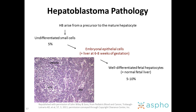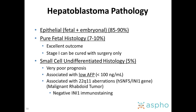The pathology of hepatoblastoma is complex and should always be reviewed by a pathology expert. Hepatoblastoma arises from a precursor to the mature hepatocyte. You may see 5% undifferentiated small cells, which usually grow to become embryonal epithelial cells that mimic the liver at six to eight weeks of gestation. The majority of cases, 85% to 90%, present with the epithelial form — either fetal or embryonal hepatoblastoma. Around 7% to 10% present with pure fetal histology, which has an excellent outcome; stage 1 can be cured with surgery only. Around 5% present with small-cell undifferentiated histology, which has very poor prognosis, usually associated with a low AFP and 22q11 aberrations.